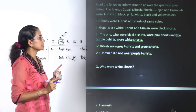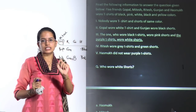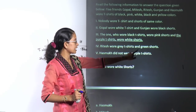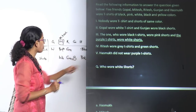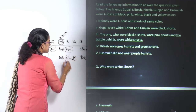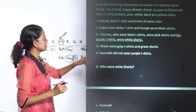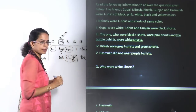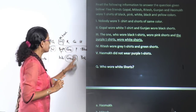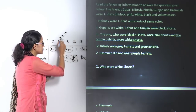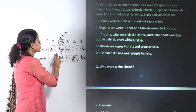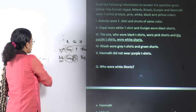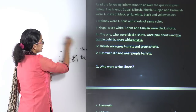This is an important problem from analytical reasoning. The approach is to first confirm the definite statements — Gopal wears white, Gunjan wears black, Ritesh wears gray and green. Then in the next round, since Hasmuk is not wearing purple, only two people can wear it. Since the purple wearer needs white shorts but Gunjan has black shorts, Mitesh — who has white shorts — is the answer. This problem was sent in by two students.